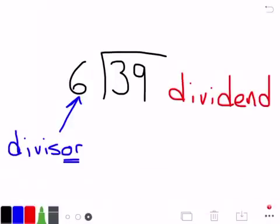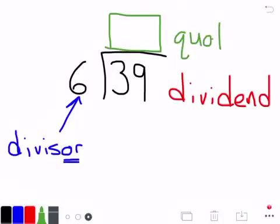And then up above, my answer I'm going to get up here is called my quotient. Okay, so 39 divided by 6, you can see the terms here, my dividend is 39, my divisor is 6, my quotient is going to be my answer.